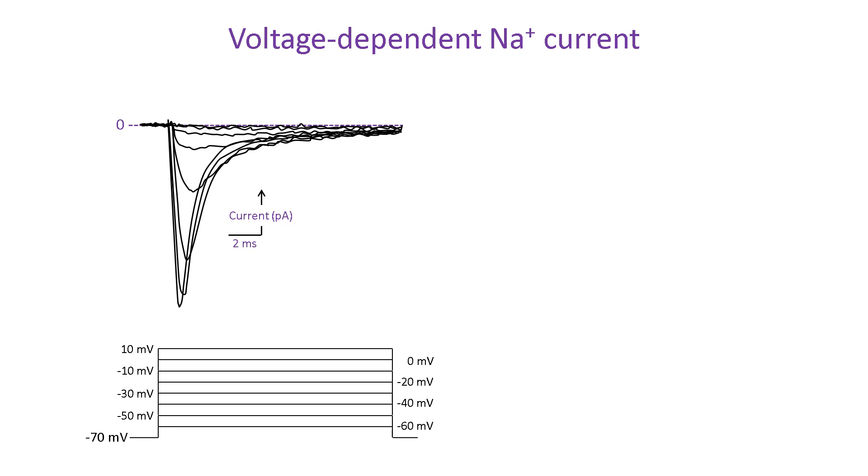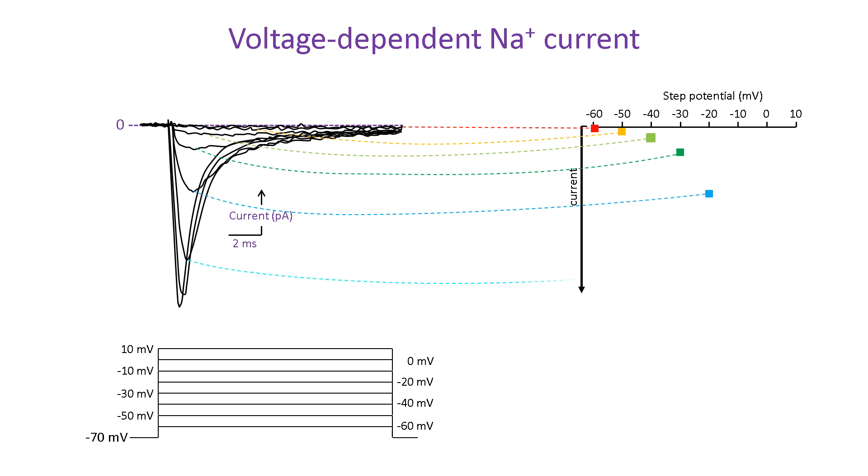With increasing voltage steps, the current amplitude increases because more ion channels are open. To investigate the voltage dependence of channel opening, we draw a current voltage curve. This is obtained by measuring the peak amplitude of the current activated by each voltage step and plotting it as a function of the voltage at which it was activated. The points are then connected to show the relationship between current and voltage.